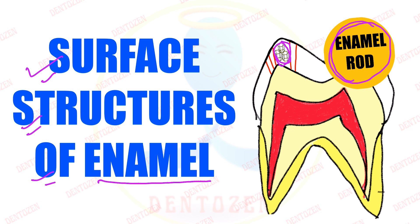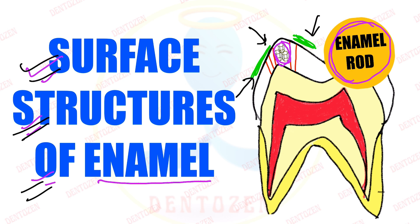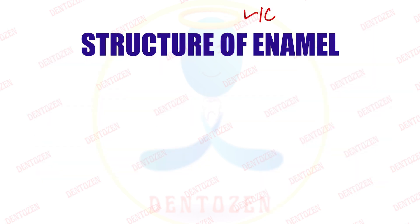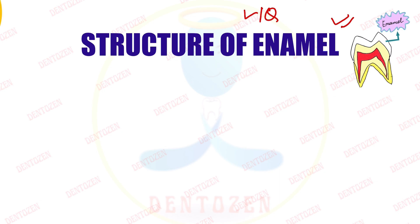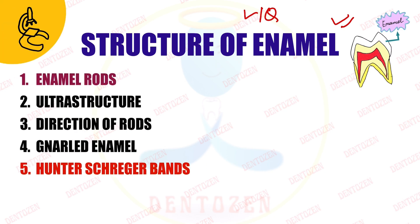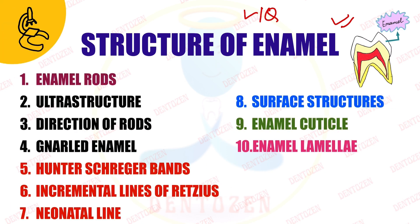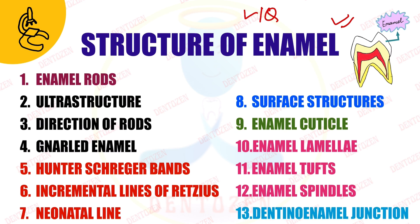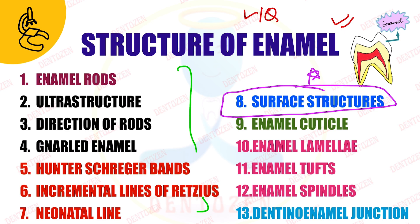If we look at the surface of this enamel directly under the microscope, then all the structures we can see come under the surface structures of enamel. This can come as a short note or as part of a long question when asked about the structure of enamel in detail. We have already discussed other microscopic structures in previous videos. In today's video, we will talk about the surface structures of enamel in detail.